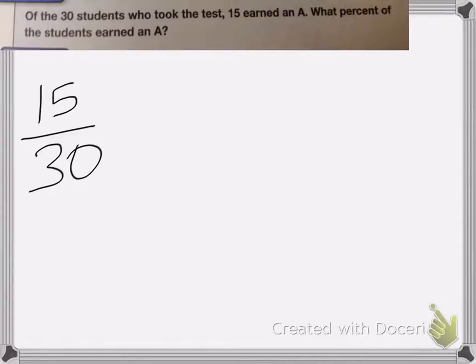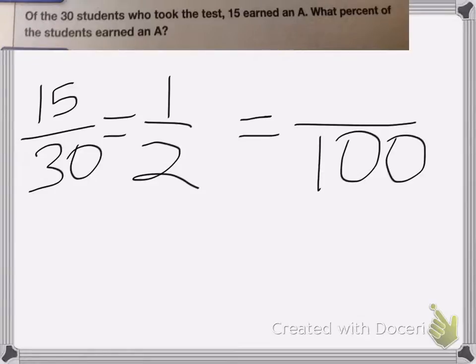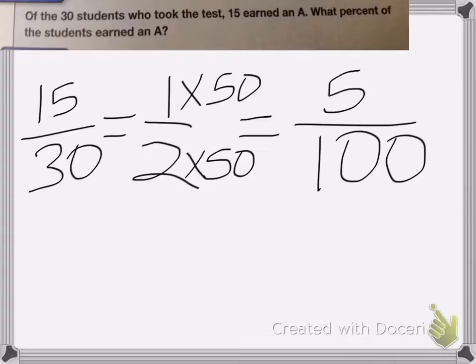Okay, on this one, I cannot easily turn it into a fraction with a denominator of 100 in this form. So I'm first going to reduce it. 15 thirtieths is the same as one half. Now this I can change into a fraction that has a denominator of 100. So I think 2 times what is 100? So 2 times 50 is 100, so I need to multiply the top by 50 as well. 1 times 50 is 50. So my percent would be 50%.